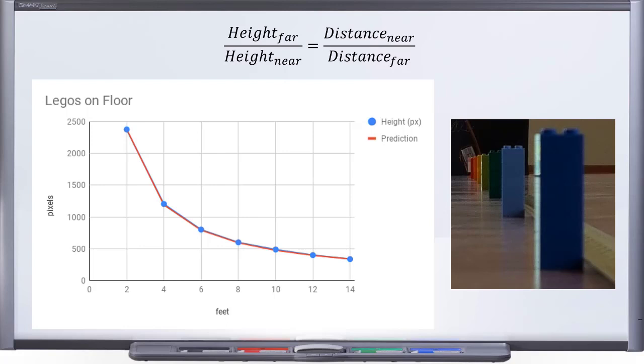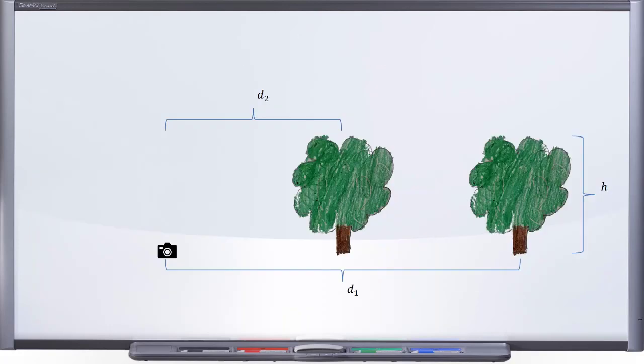When you do an experiment like that one, you'll probably have a slightly different picture. Instead of a small object up close and a tall one in the back, you'll probably have a row of objects all the same size. Let's see how our math can be used with a situation like that.